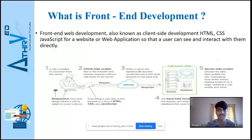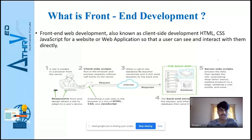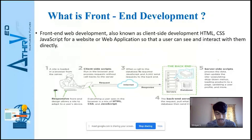What is front-end development? A website is divided into two main parts: front-end development and back-end development. Front-end development is also known as client-side development, in which languages like HTML, CSS, and JavaScript are used for a website or web application. Web development languages like HTML, CSS, JavaScript, and DOM are used to build websites or web-based applications.